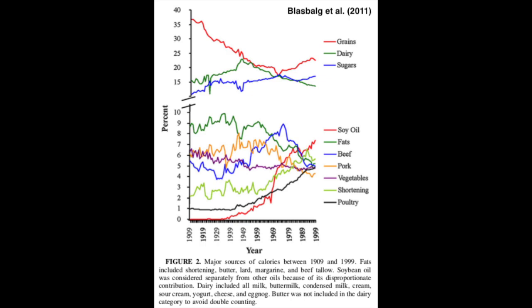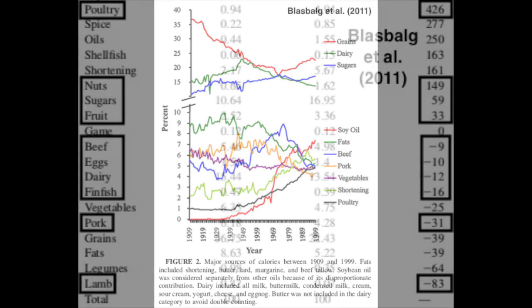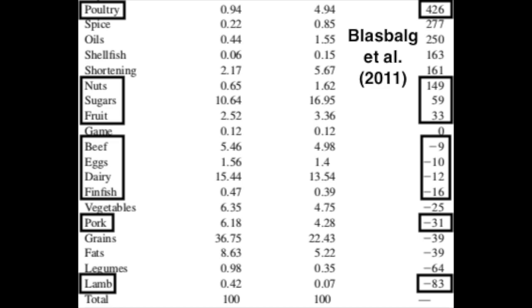Many foods were ebbing and flowing into and out of the diet over this time period. From 1909 to 1999, calories from fruit increased 33 percent, from nuts 149 percent, and from poultry 425 percent. During that same time period, items that decreased were beef at 9 percent, eggs down 10 percent, dairy down 12 percent, fish (not including shellfish) down 16 percent, pork down 31 percent, and lamb plummeting 83 percent.